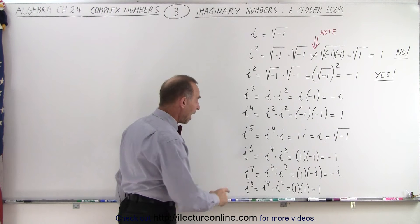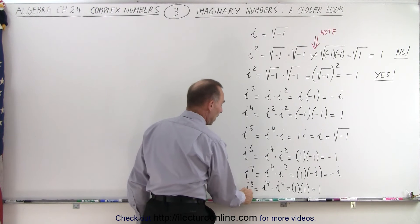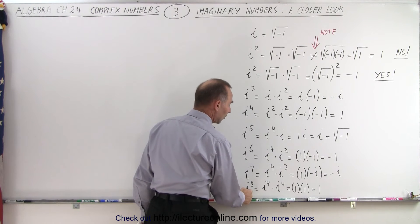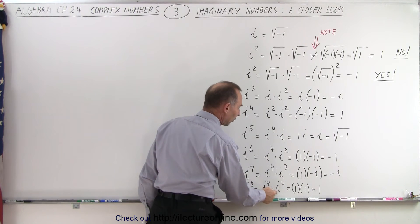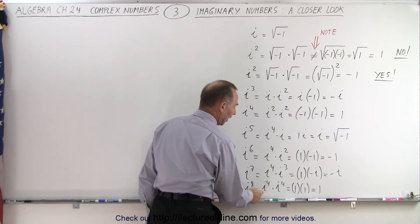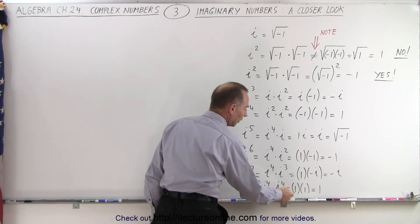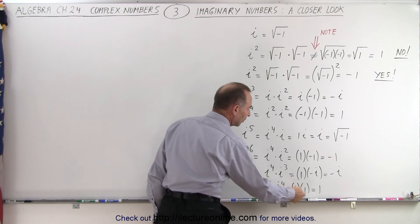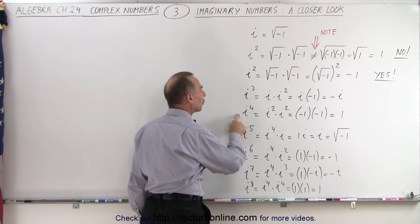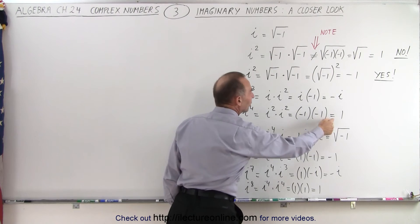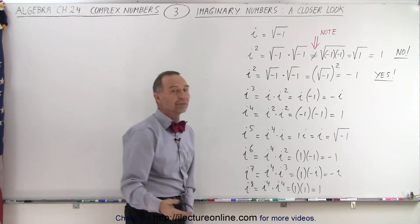i to the eighth power is the same as i to the fourth times i to the fourth. Since i to the fourth is 1, that's 1 times 1, which is 1. So i to the eighth is the same as i to the fourth, equal to 1.